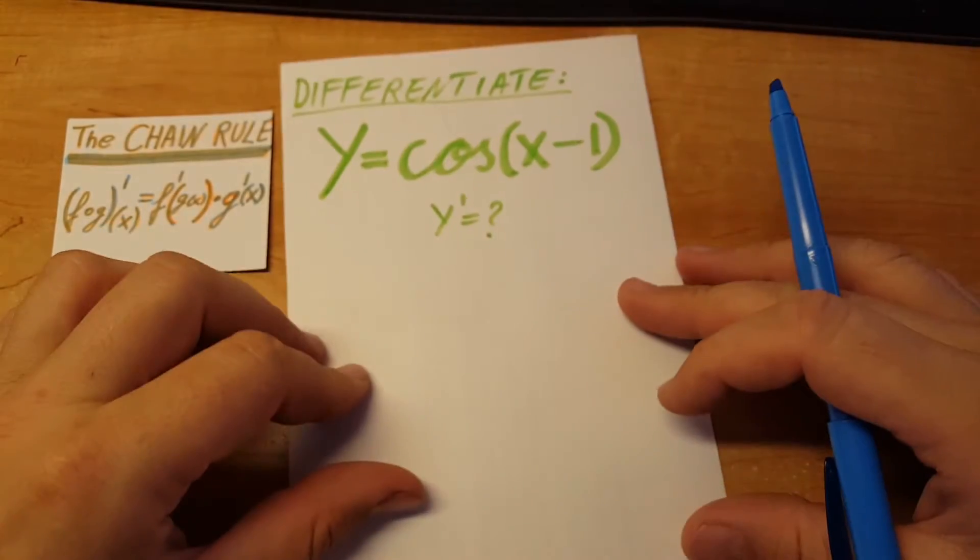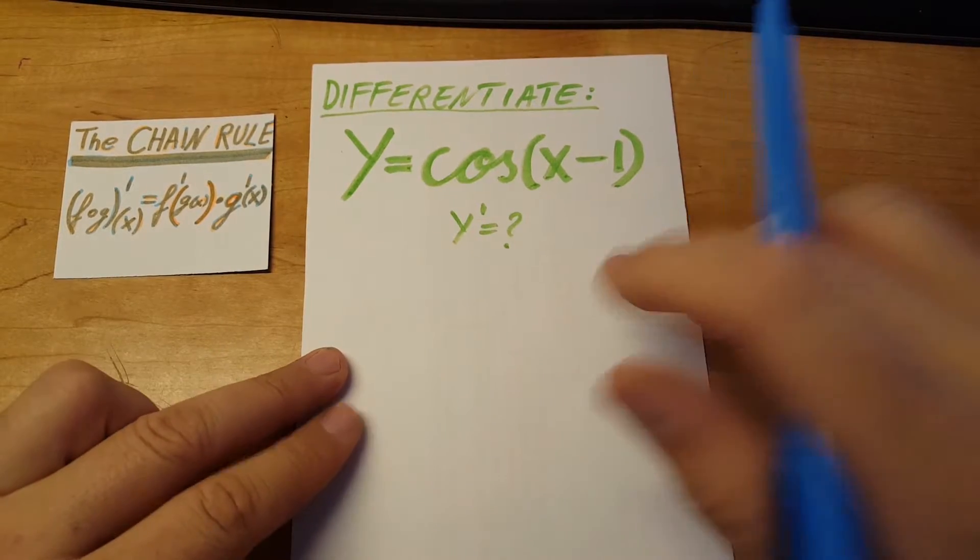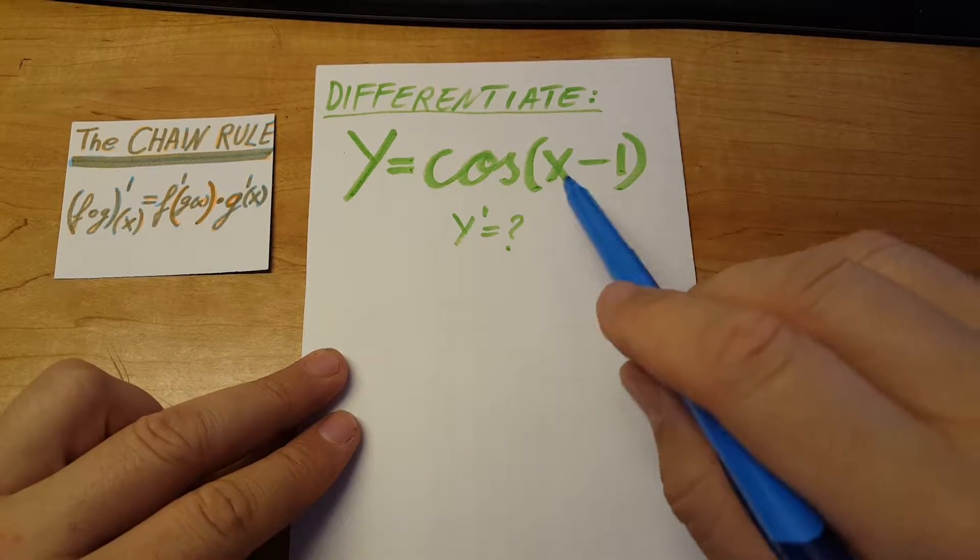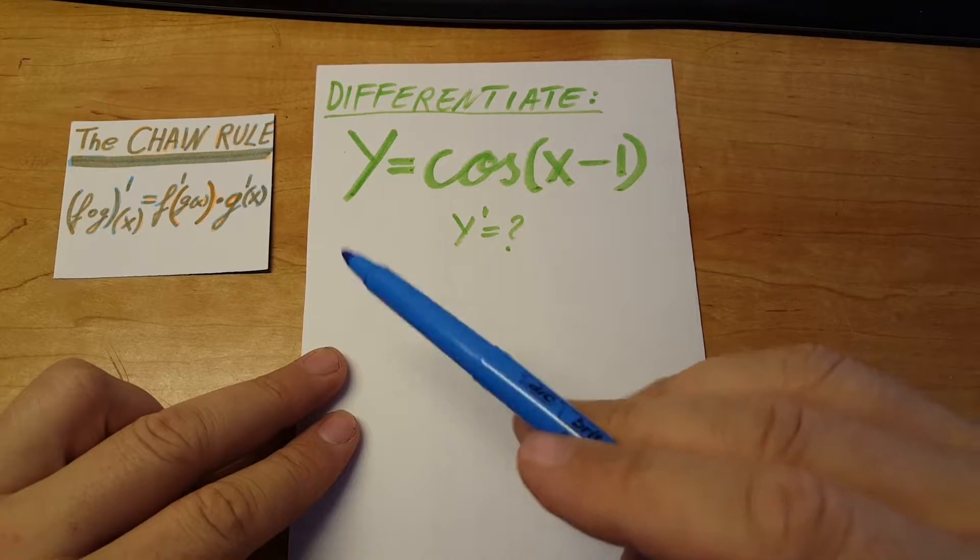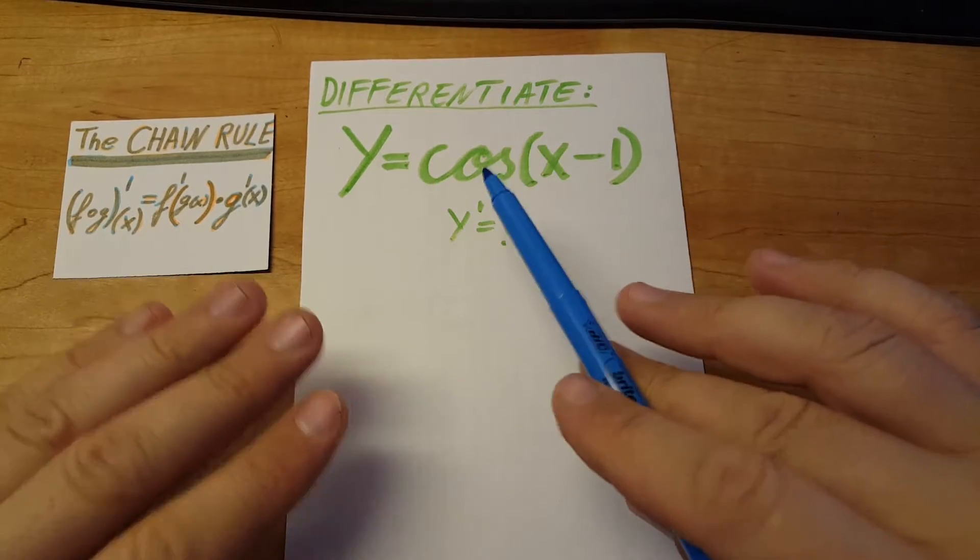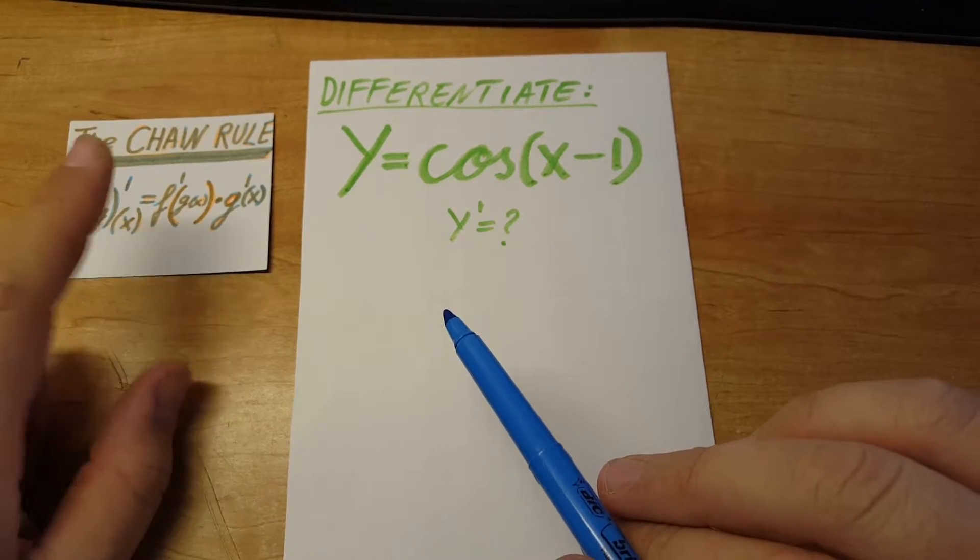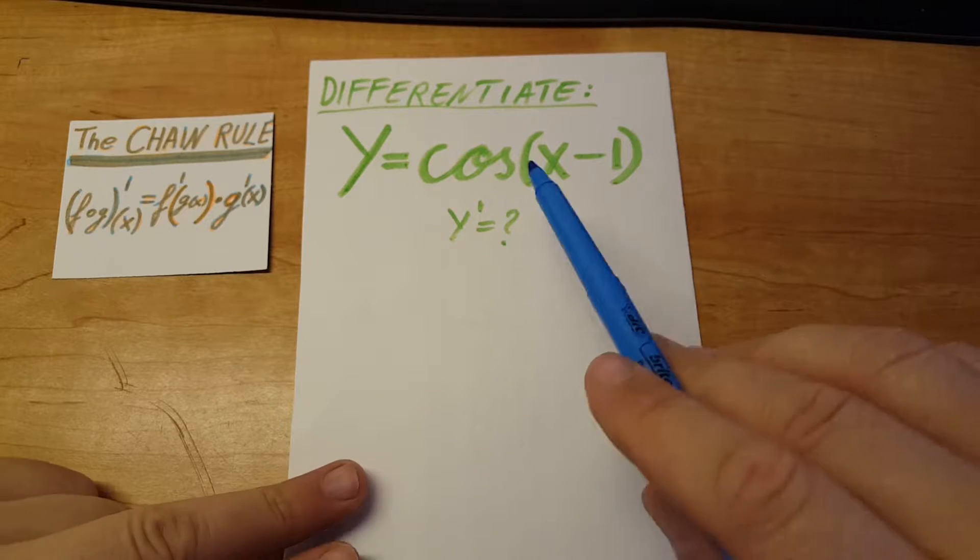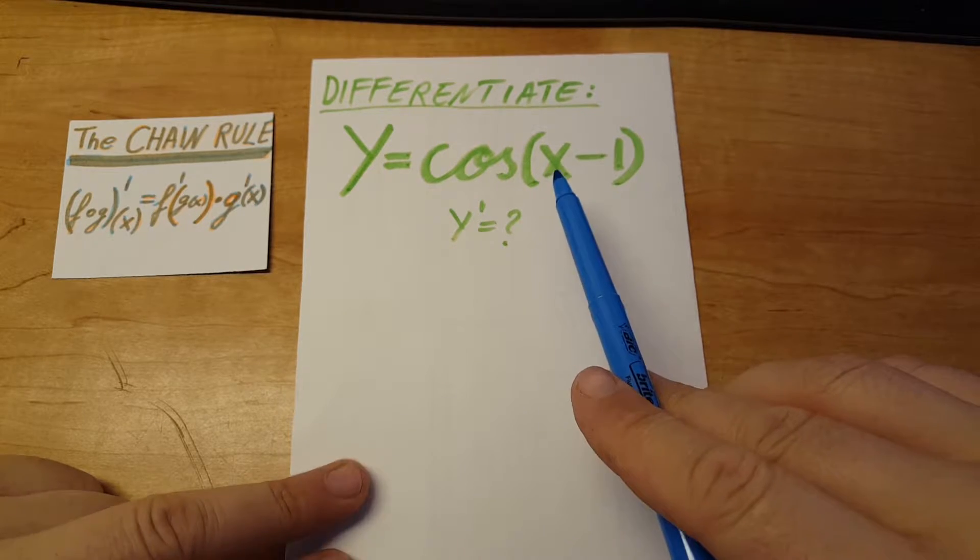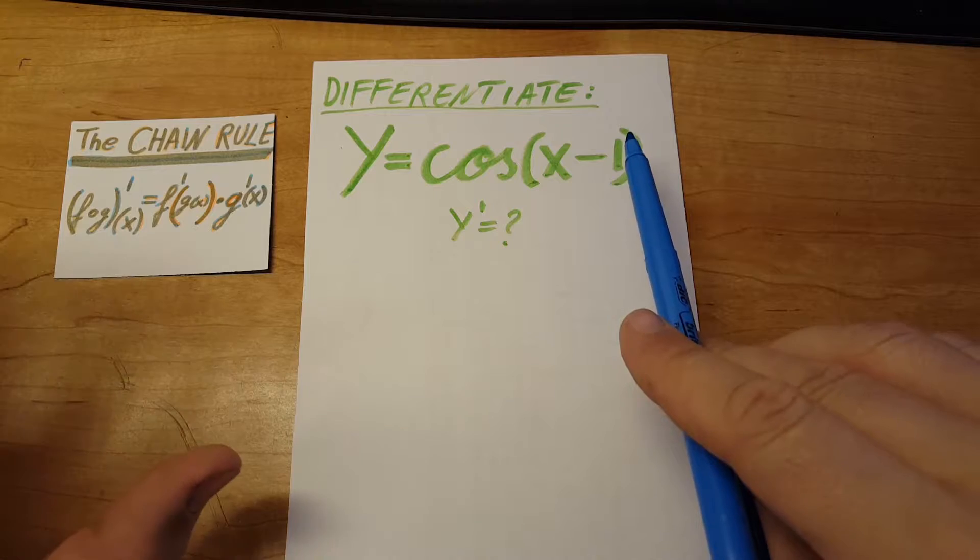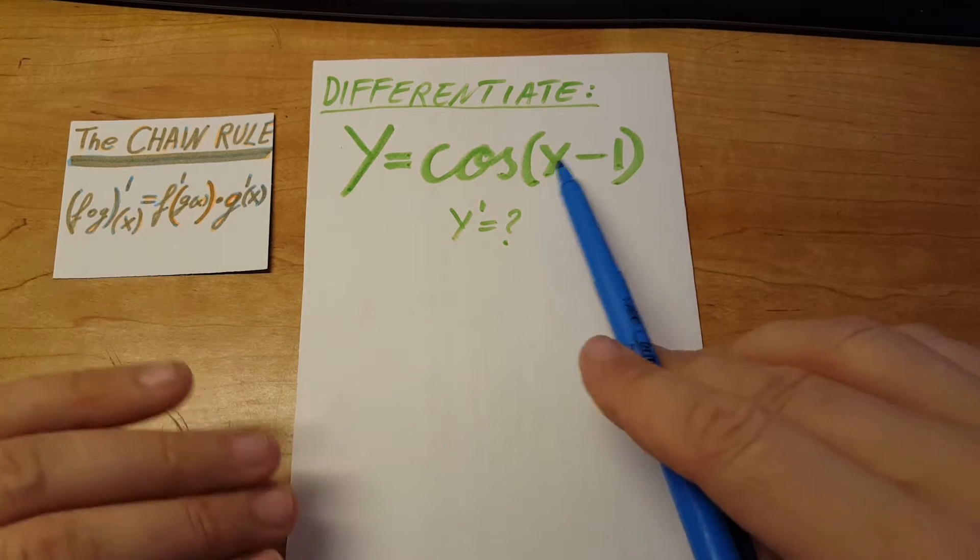Okay, let's take the derivative of this equation: y equals cosine of x minus 1. This is the same thing as cosine of x. In both cases we use the chain rule. Cosine of x will be handled the same way as x minus 1.